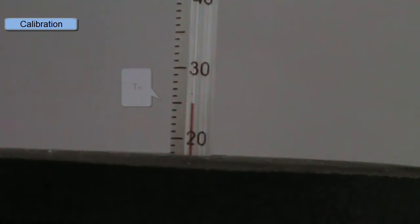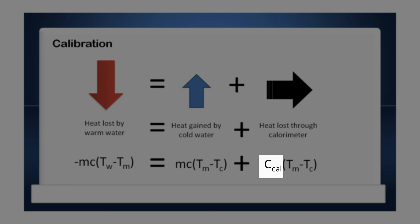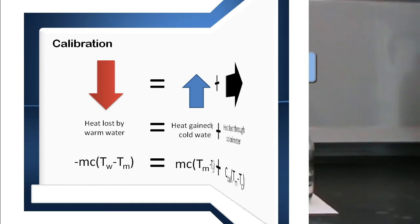So we can use this information to work out how much heat was lost through the walls of the calorimeter. This is done very easily using this calculation. We can say that the heat lost by the warm water is equal to the heat gained by the cold water plus the heat lost through the calorimeter. And knowing Tc, Tw, and Tm, we can work out Ccal, the calorimeter constant. And this will allow us to work out how much heat is being lost through the calorimeter in a reaction.